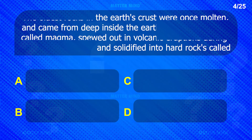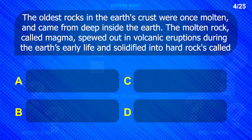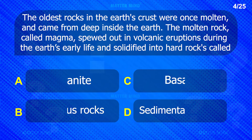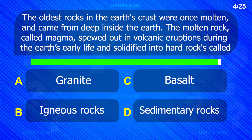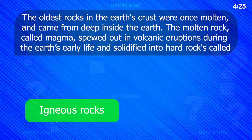The oldest rocks in the Earth's crust were once molten and came from deep inside the Earth. The molten rock, called magma, spewed out in volcanic eruptions during the Earth's early life and solidified into hard rocks, called igneous rocks.